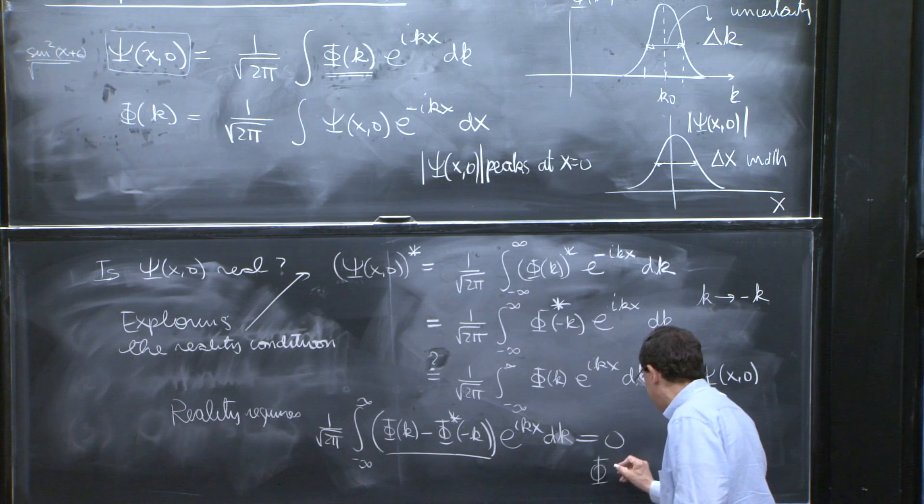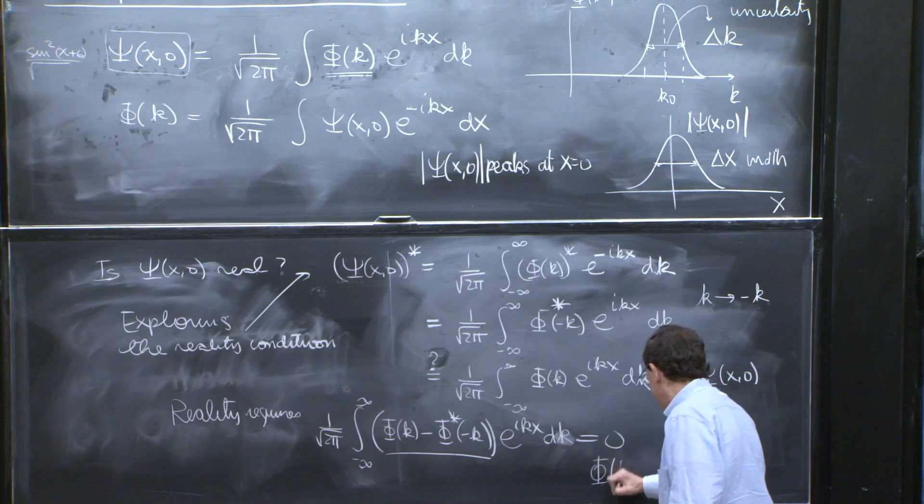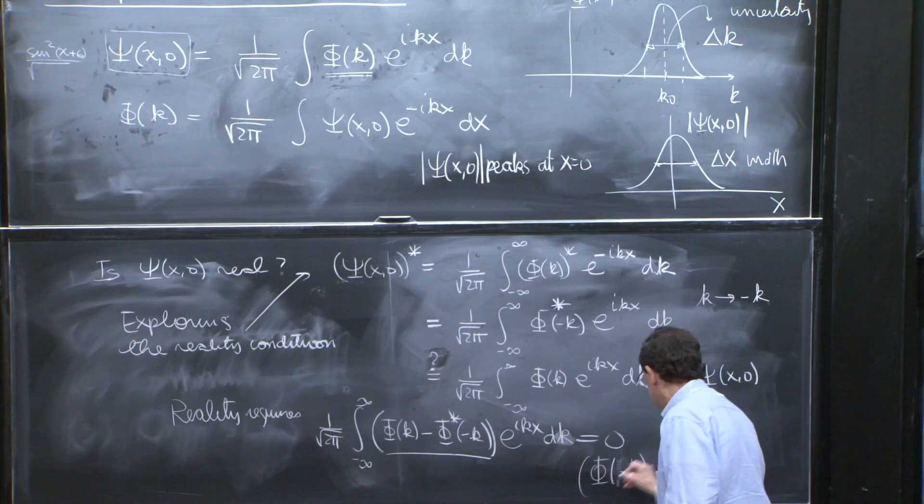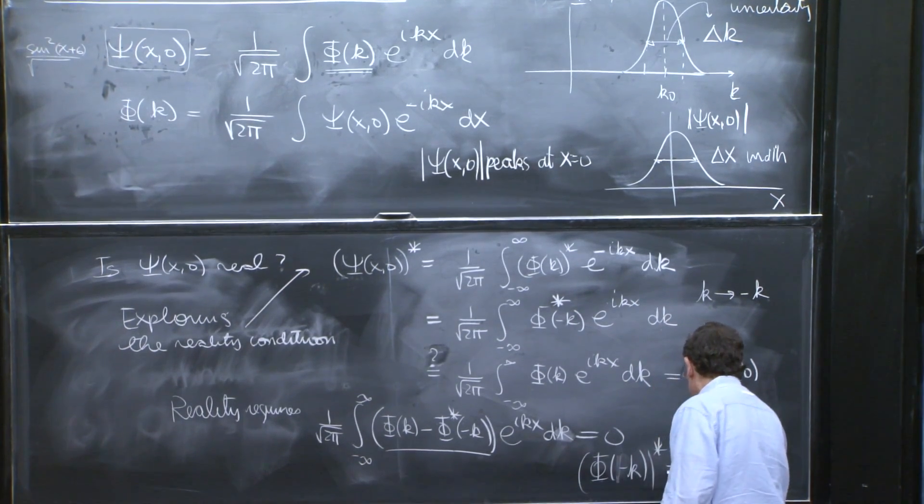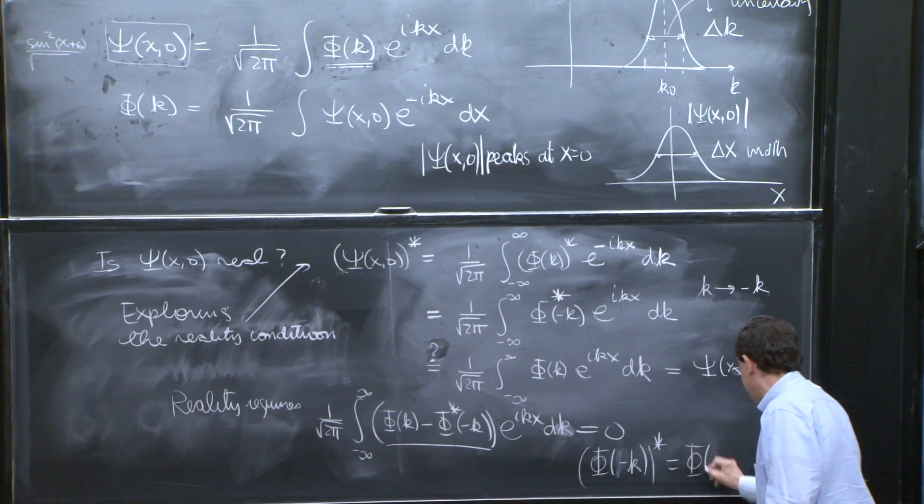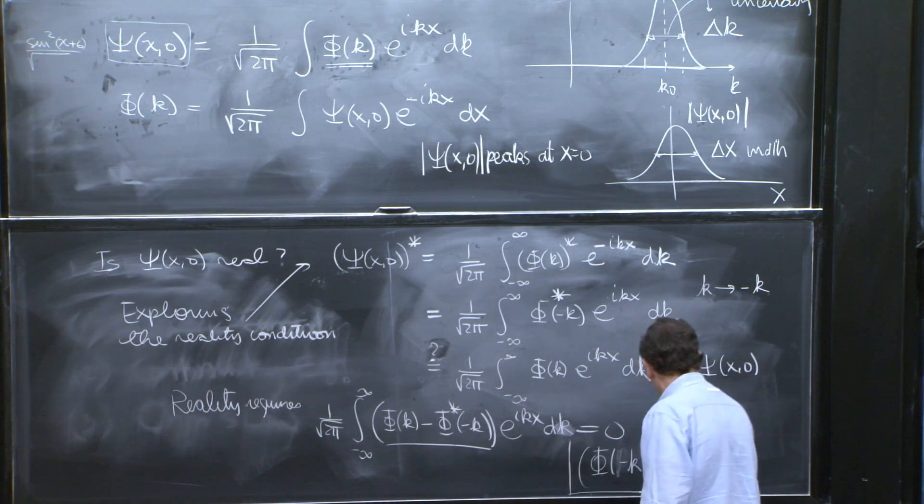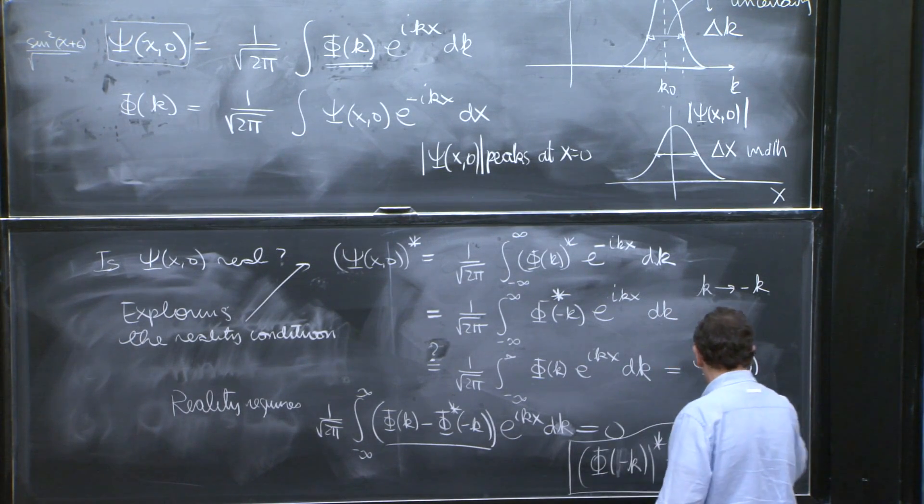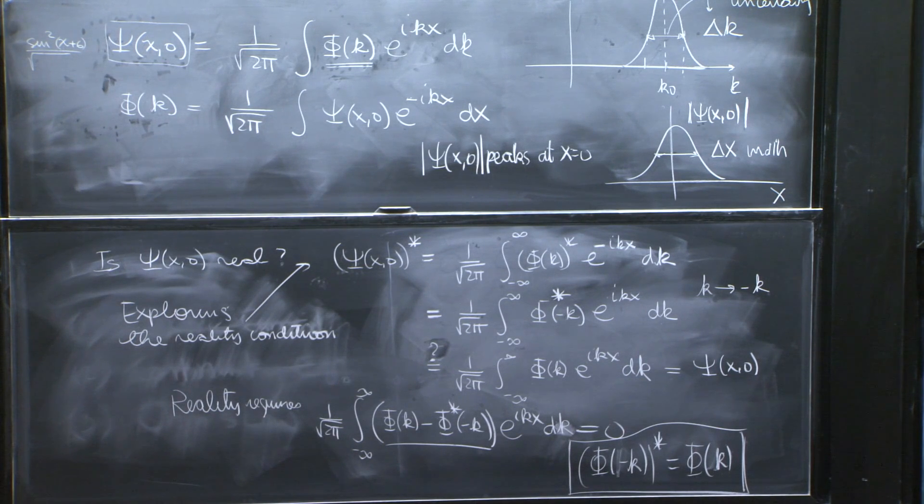And therefore, you get the conclusion that phi of minus k star must be equal to phi of k. And that's the condition for reality. So if a phi of k satisfies this property, the psi of x will be real. And our phi of k doesn't satisfy this property. What do you see in this property?